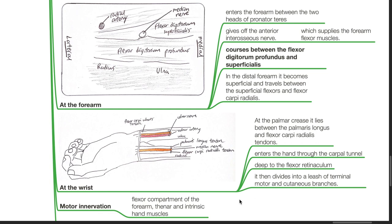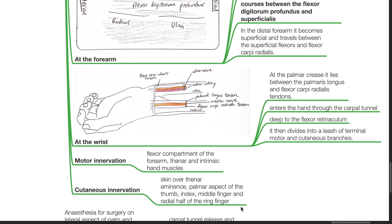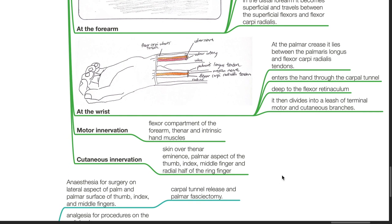Motor innervation includes the flexor compartment of the forearm, thenar, and intrinsic hand muscles. Cutaneous innervation of the skin over the thenar eminence, palmar aspect of the thumb, index, middle finger, and the radial half of the ring finger.